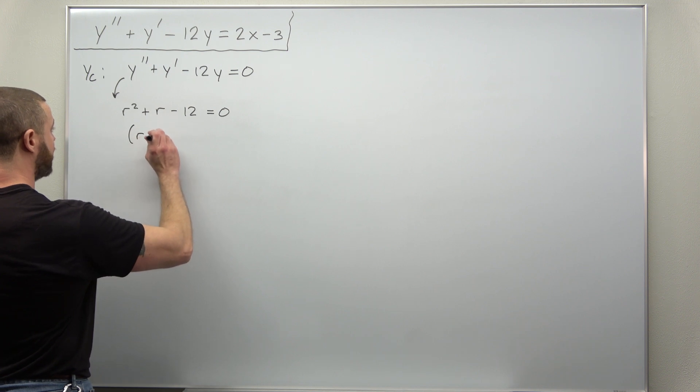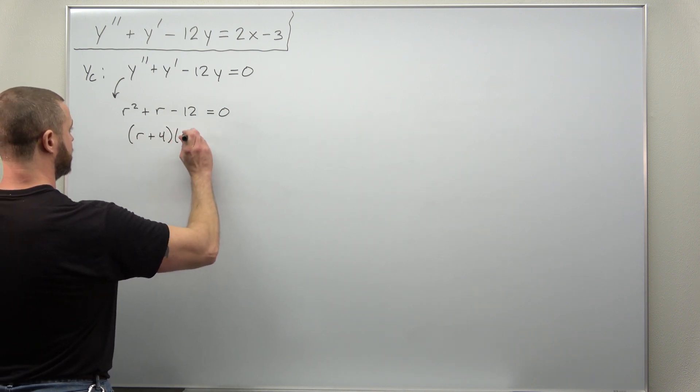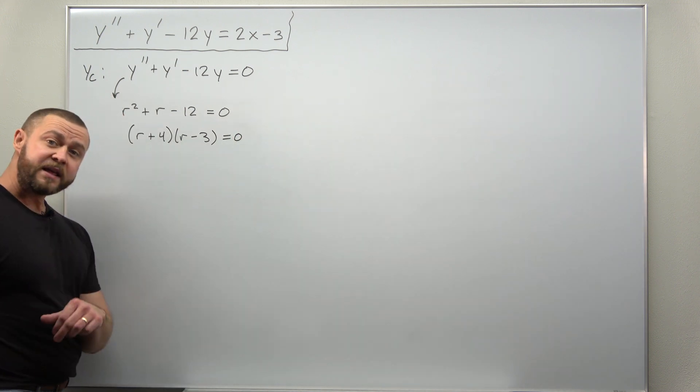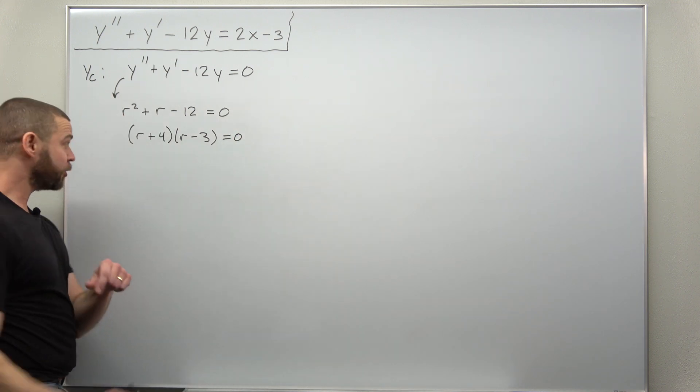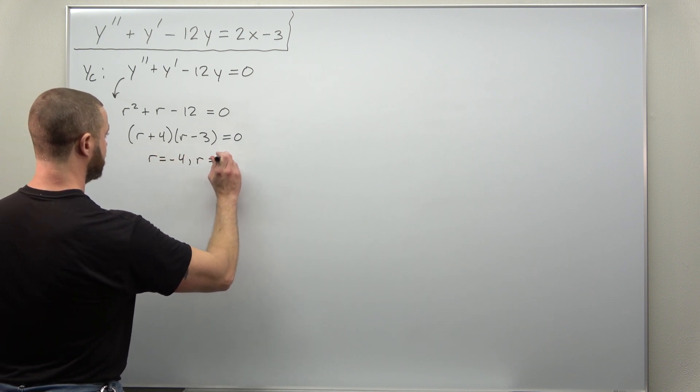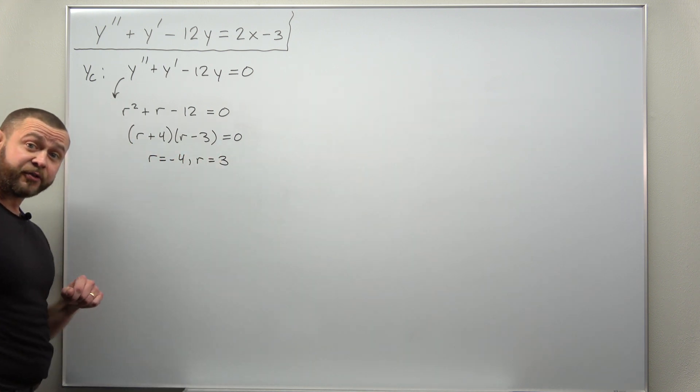This factors as r plus four times r minus three and we get two distinct real roots, negative four and positive three.